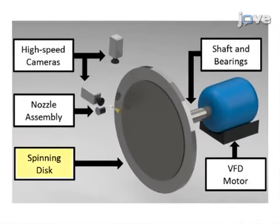The first is a spinning disk with a top speed of 100 meters per second onto which a nozzle sprays a liquid jet. Video cameras capture the liquid impact on the surface for later analysis.